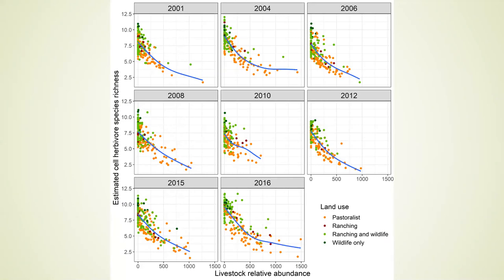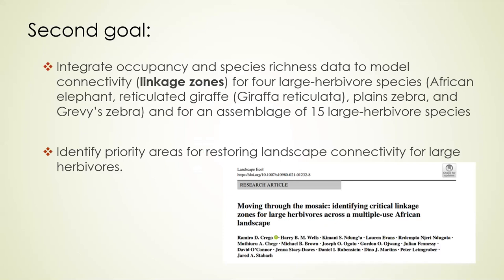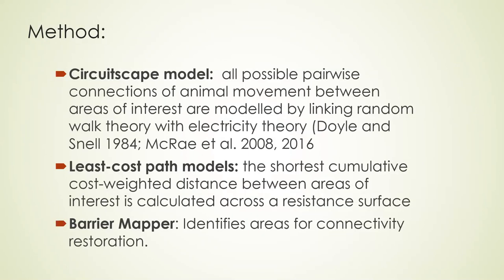The second objective was to integrate data obtained from the occupancy model and species richness with key species data obtained from stakeholders. We integrated this data with the idea of identifying priority areas that need to be restored for connectivity for large herbivores. The main aim was to identify those areas that are priority for conservation and are key to the connectivity of this landscape.